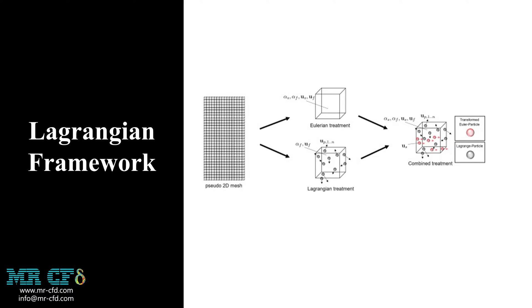As mentioned earlier, we must track the discrete phase in the Lagrangian framework. So, what is Lagrangian framework? The Lagrangian frame of reference is a way of describing the motion of the secondary phase particles in a CFD simulation. In this frame of reference, the particles are treated as individual entities that follow their own trajectories as they move through the flow.